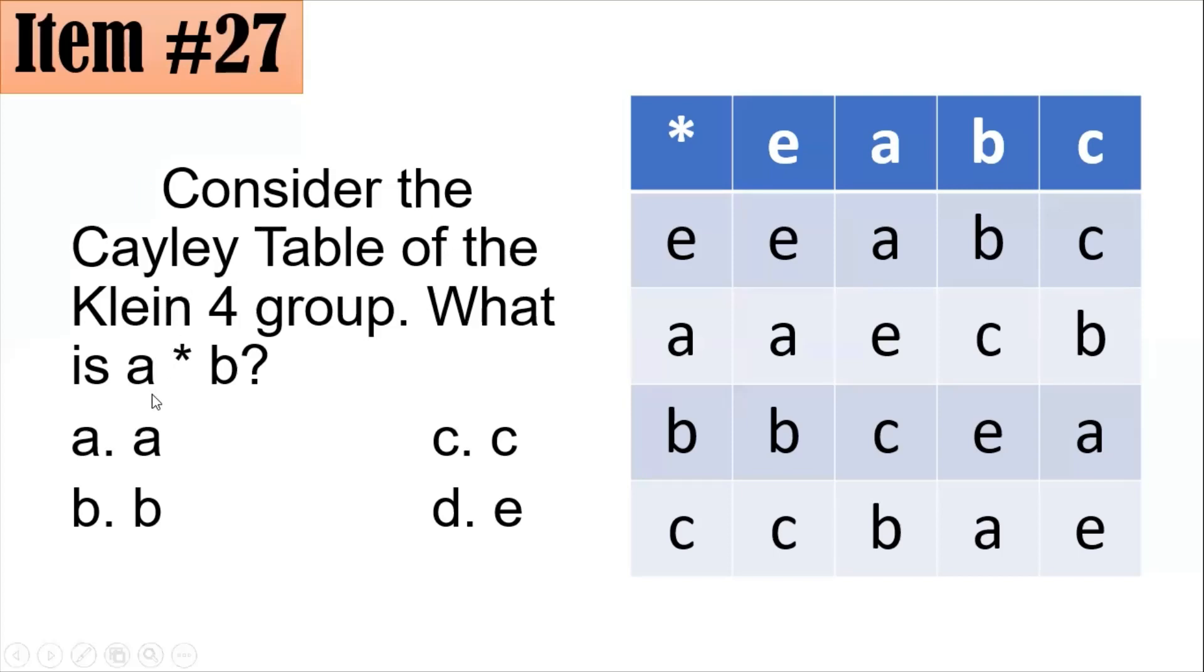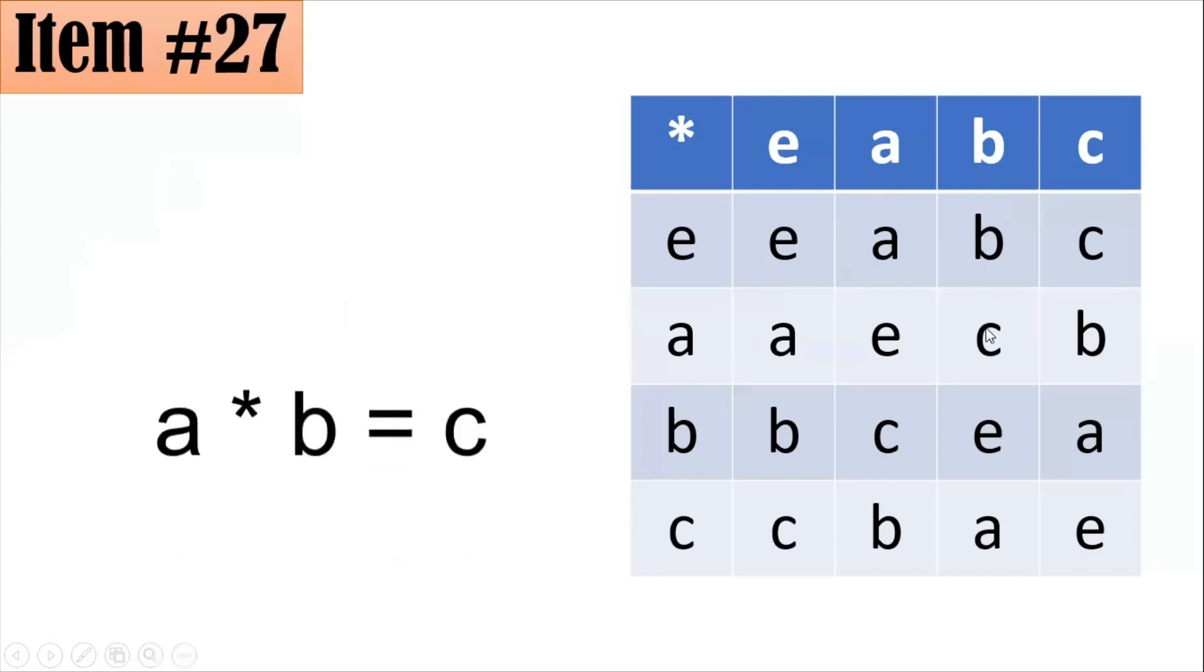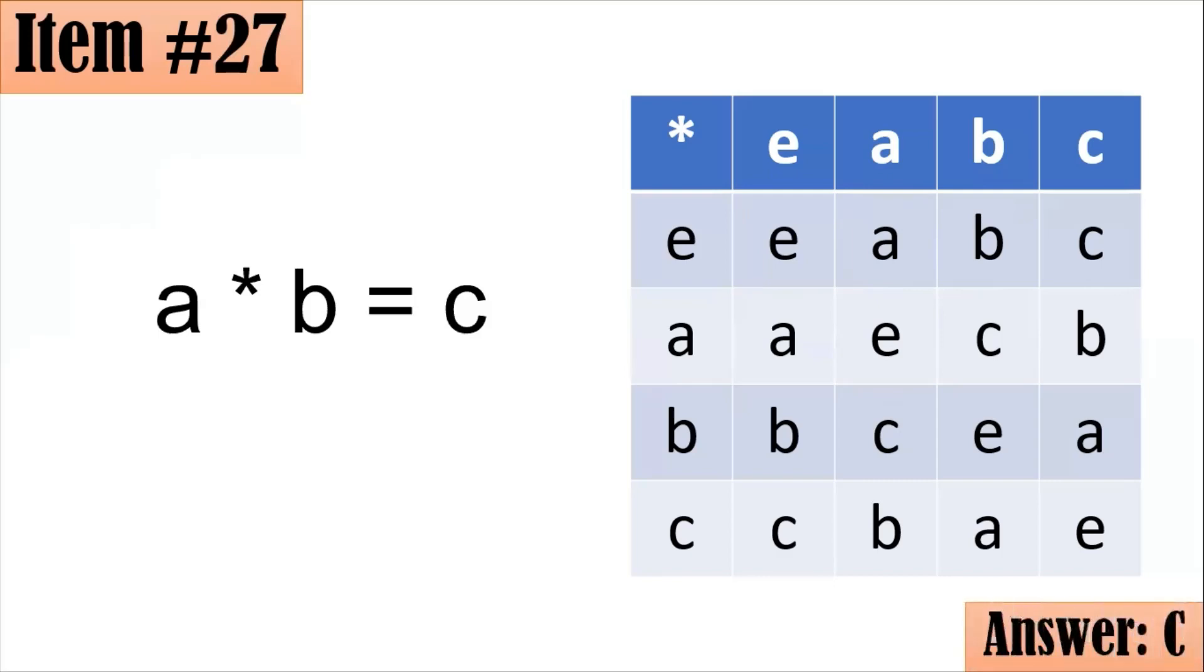So in this case, what is A star B? So we have here A, we have here B, we have A star B, you have C. Because it's the intersection of A and B here, which is C. Don't worry, if you place here the B and you have here the A, you still get C as the intersection. Because what is good is that Klein IV is in fact abelian, meaning commutativity holds true. So A star B is C, letter C is the correct answer.